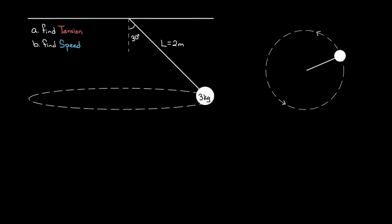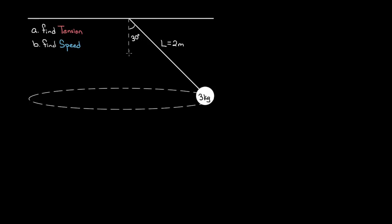The questions I want to ask are two things: what is the tension in the rope, and what has to be the speed of the mass? Our given variables are: the mass is three kilograms, the length of the rope is two meters, and this rope is making an angle of 30 degrees with respect to the vertical.